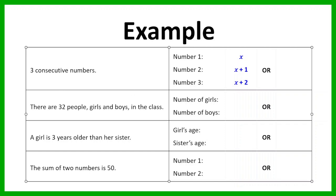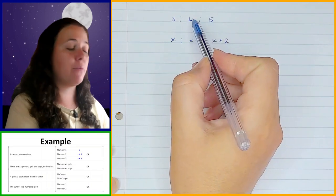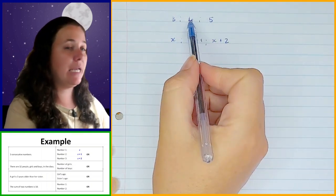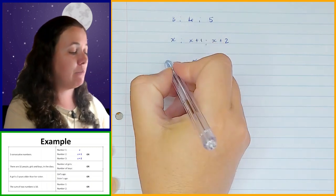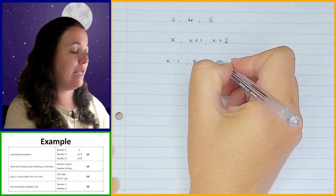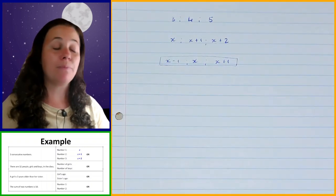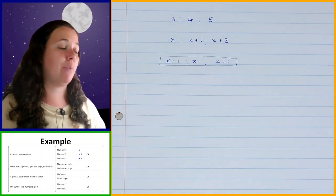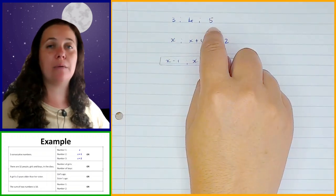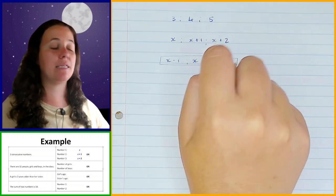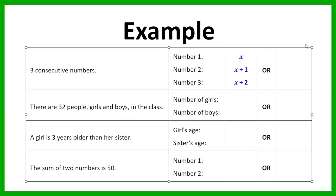There is another way of doing it: making the middle number x. Then how do I get from 4 to 3? I subtract 1, so x minus 1. And from 4 to 5? I add 1, so x plus 1. This is sometimes a better way when solving a word problem. You could also make the last number x, giving x minus 2, x minus 1, and x. So those are two different ways of representing three consecutive numbers in terms of x: x, x+1, x+2, or x−1, x, x+1.